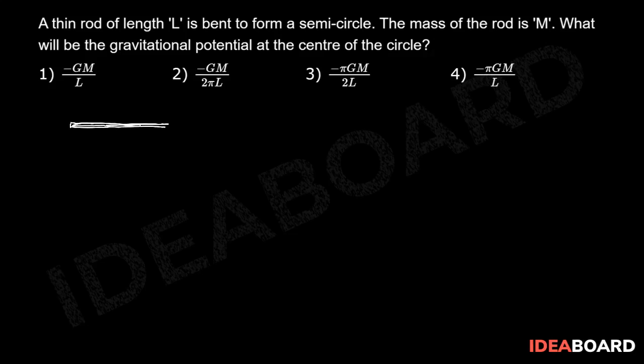So it is a thin rod of length L. Now it is bent into a semicircle whose radius is R.